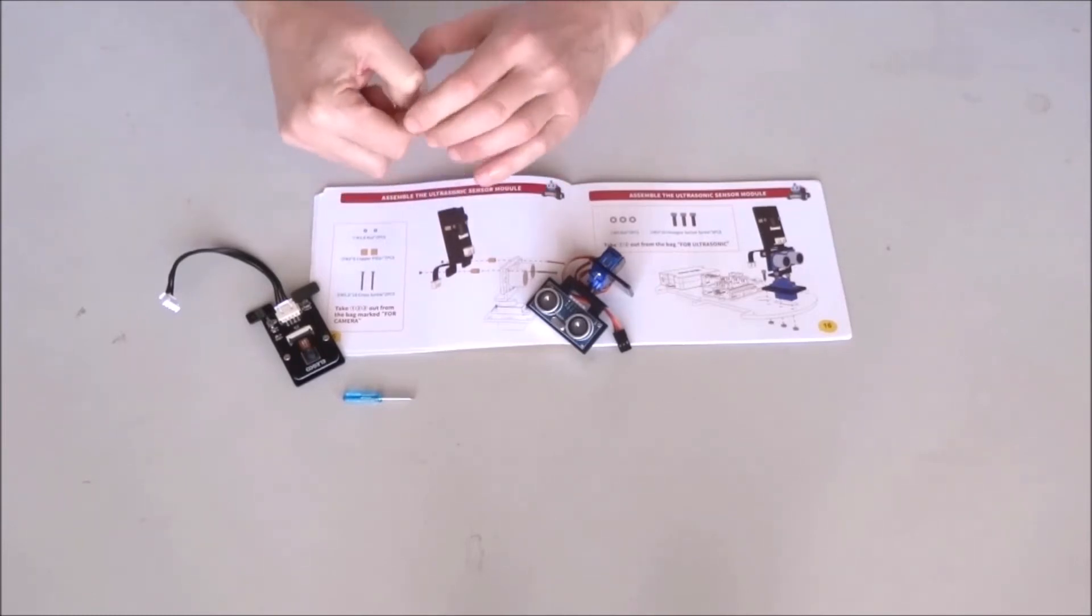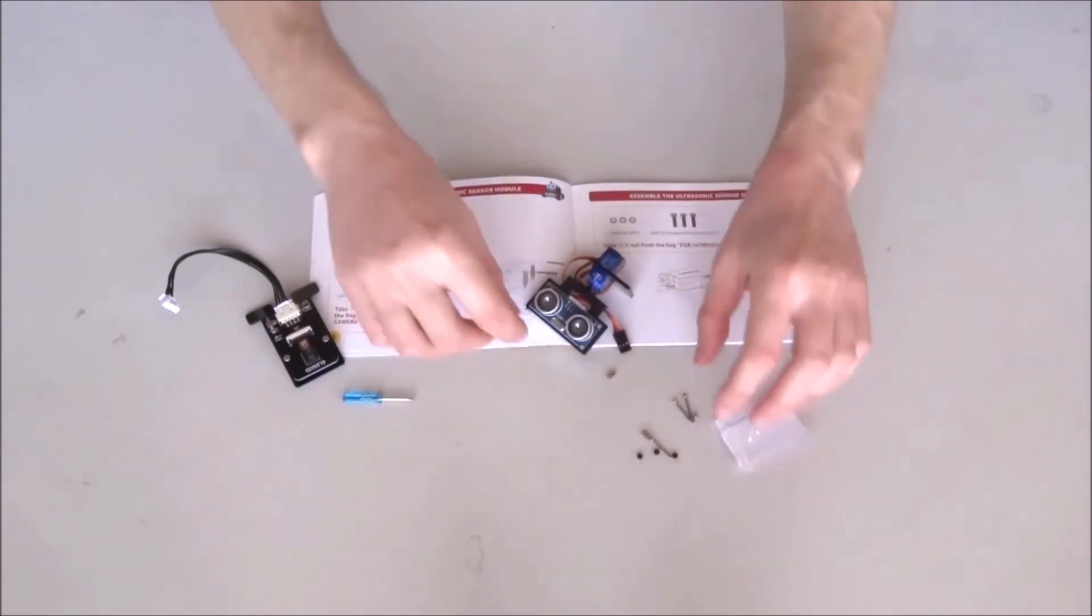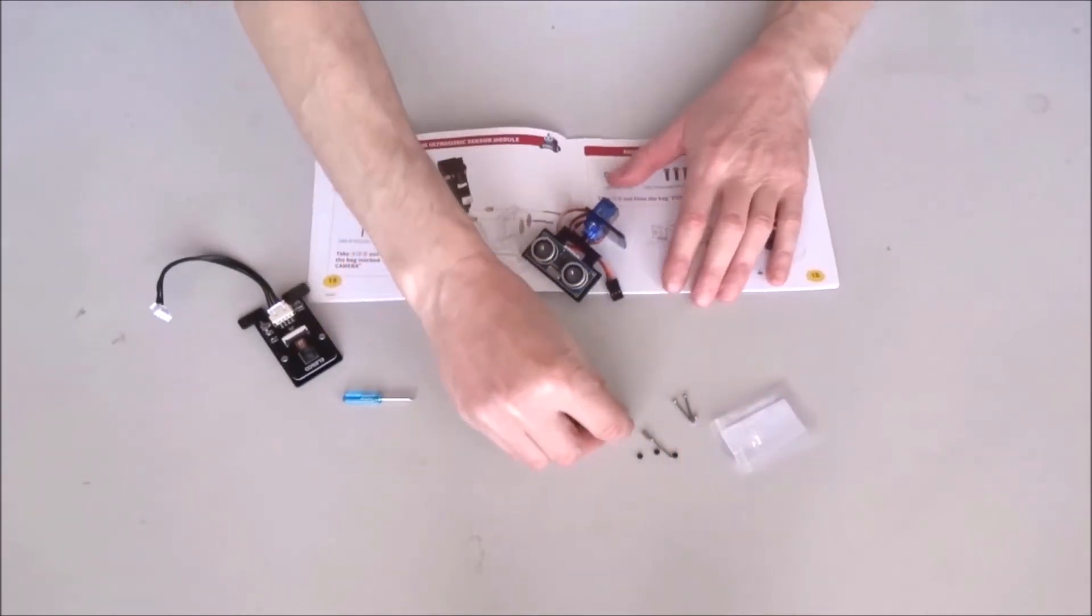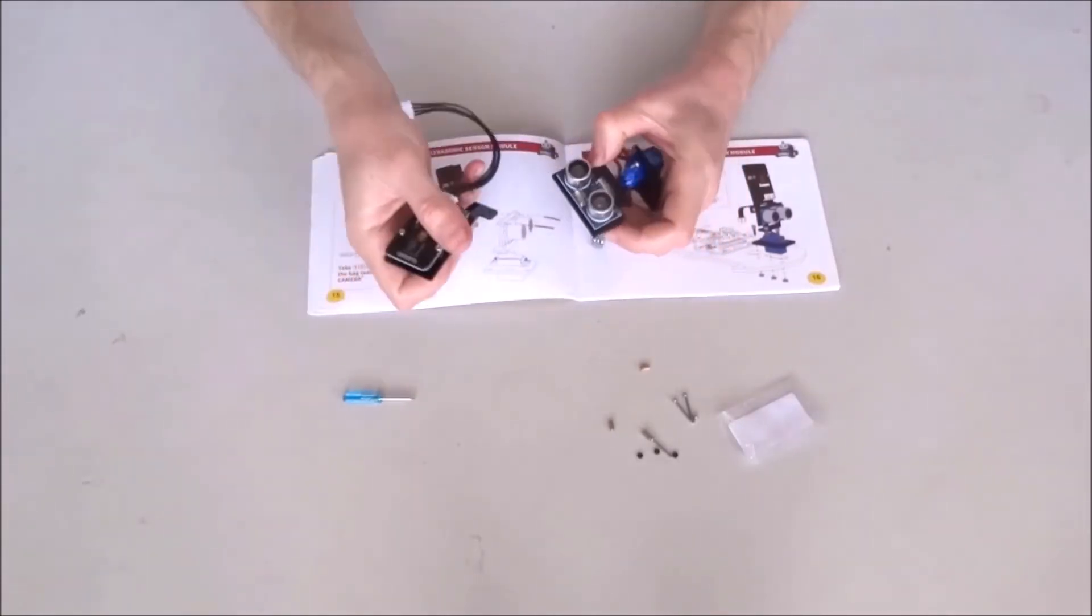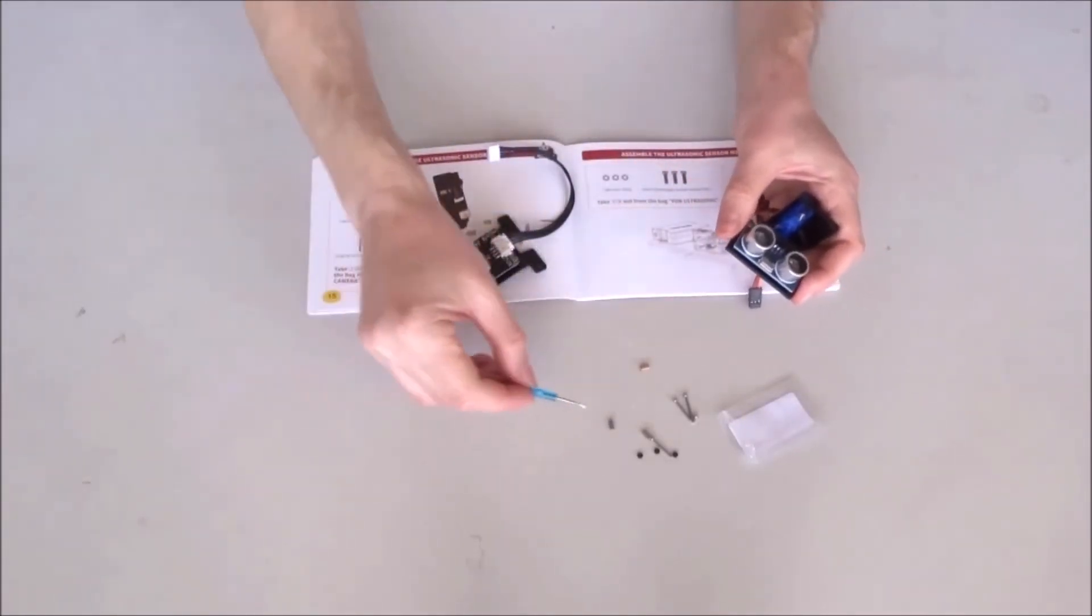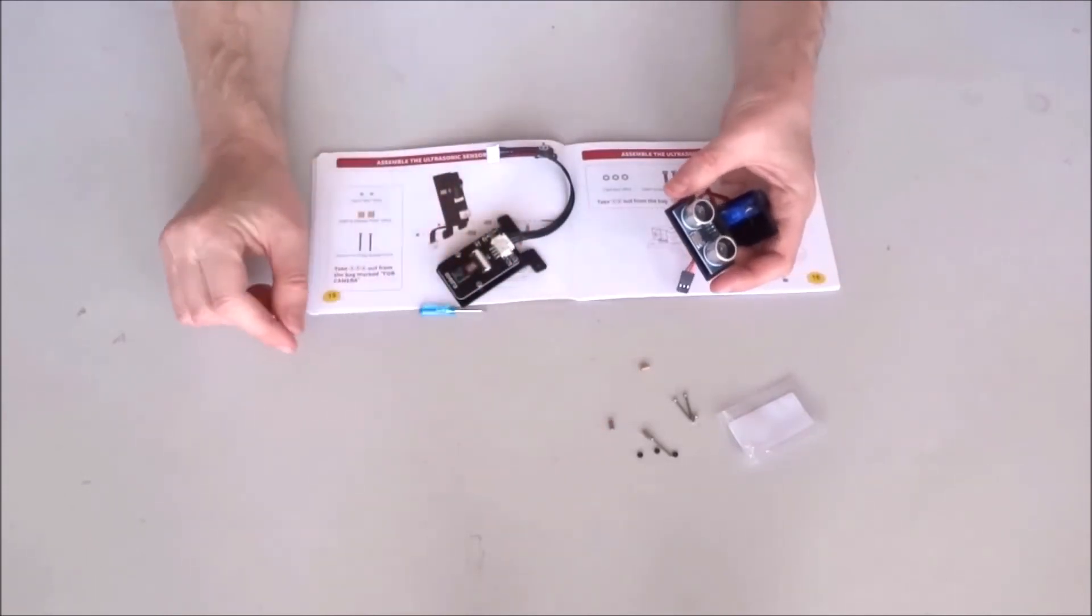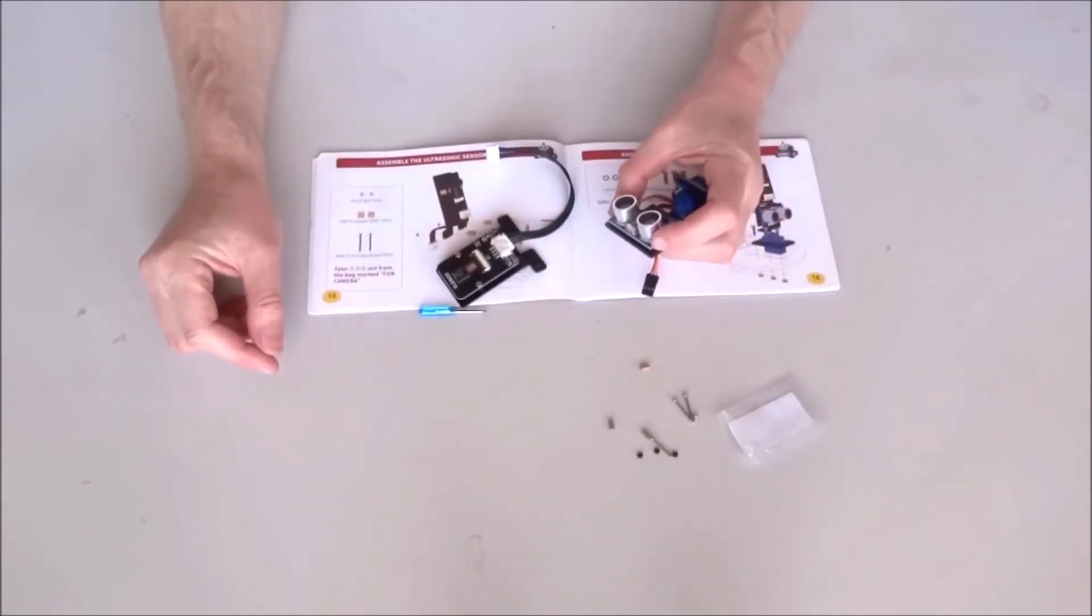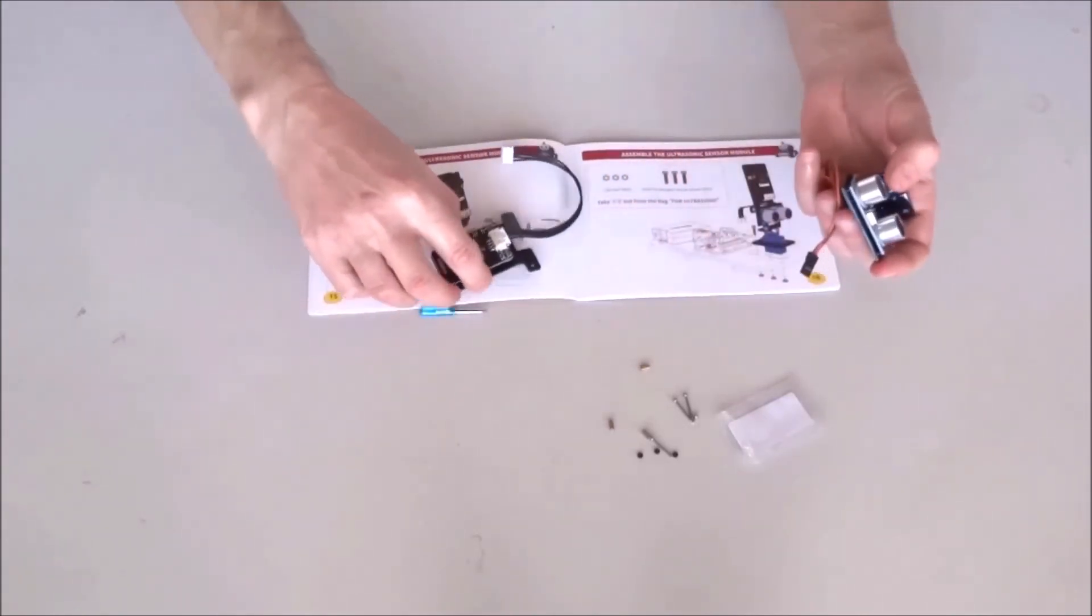So go ahead, take out the parts from the bag. Make it easy for us to access everything. It is really nice that Elego has included spares of these little bolts and nuts, because sometimes they're easy to lose. I have experience with this.